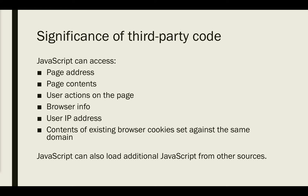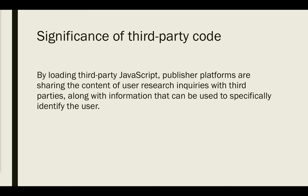Under our fairly common understanding of what constitutes personally identifiable information — at least at my institution — we don't consider IP addresses to be personally identifiable. But by loading third-party JavaScript, publisher platforms are effectively sharing the content of user research inquiries with third parties, along with information that can — and I would say will — be used to specifically identify the user, bringing those two things together in a way that we typically would try to protect.